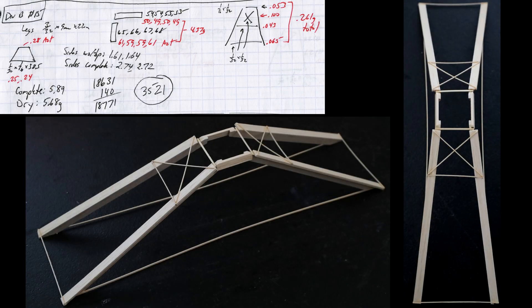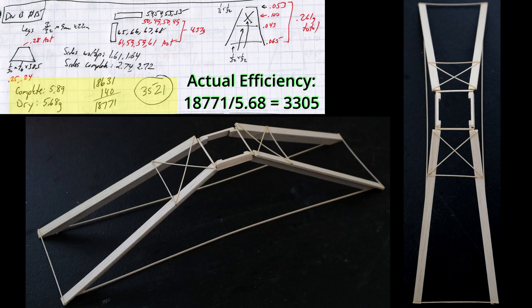This is the first of two bridges I'm going to show in detail. This one weighed 5.68 grams and held an incredible 18.77 kilograms for a competition score of 3521. And even more impressive, an actual efficiency of 3305. If that actual efficiency was achieved at 15 kilograms instead of 18.77 kilograms, the competition score would have been over 4,400.